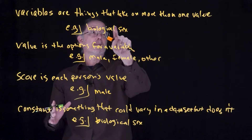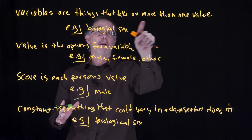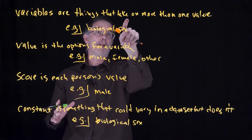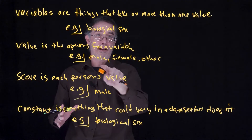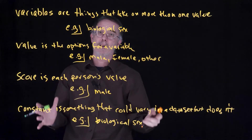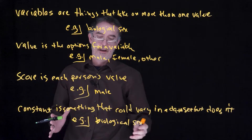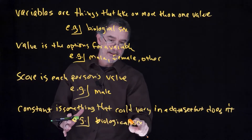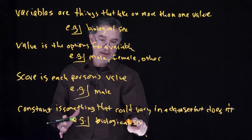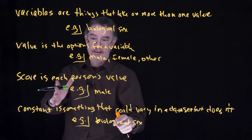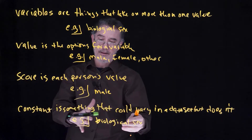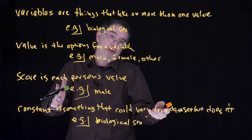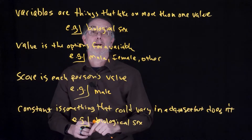If biological sex varies — if the individuals take on more than one value — then it is a variable. If everybody has the same value, if they all have the same score, if they are all male, then it is a constant. If they are all female, then it would be a constant.